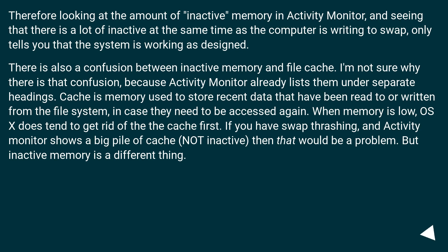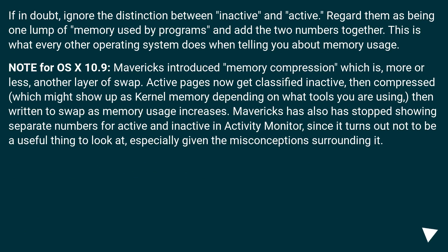There is also a confusion between inactive memory and file cache. Activity Monitor already lists them under separate headings. Cache is memory used to store recent data read from or written to the file system, in case they need to be accessed again. When memory is low, OS X does tend to get rid of the cache first. If you have swap thrashing and Activity Monitor shows a big pile of cache — not inactive — then that would be a problem. But inactive memory is a different thing. If in doubt, ignore the distinction between inactive and active; regard them as one lump of memory used by programs. This is what every other operating system does.